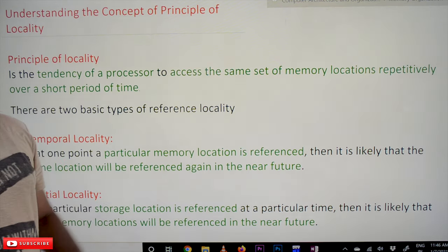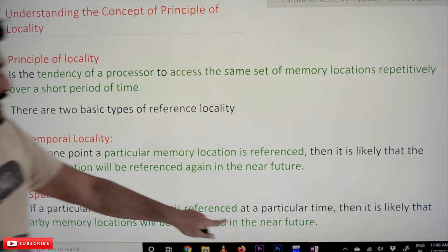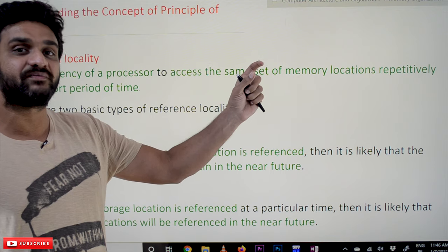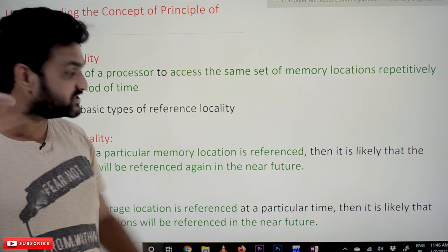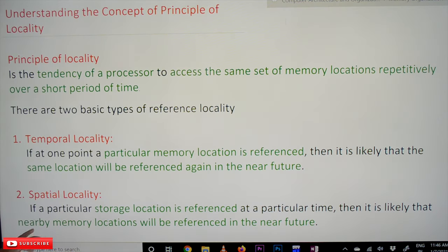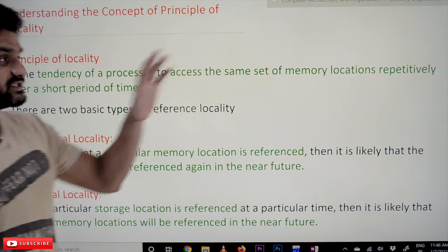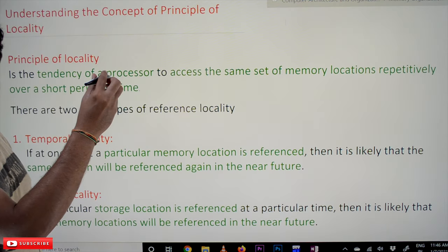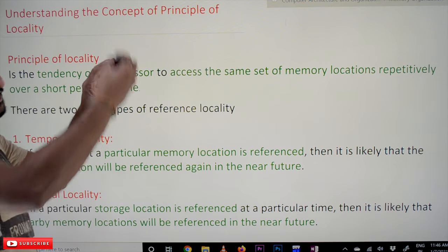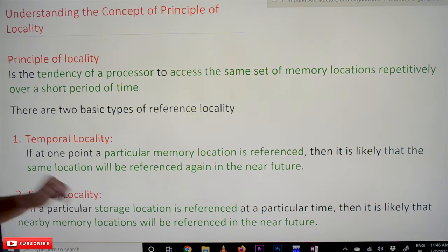The next one is spatial locality. If a particular storage location is referenced at some particular time, then it is likely that nearby memory locations will be referenced in the near future. For example, if memory location X has been accessed, then in the near future the very nearby locations will get accessed. That is what we call spatial locality.